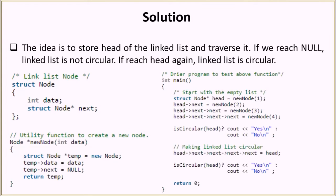Let's look at the solution. The idea we will be following is to store the head of the linked list in a variable and then keep traversing the linked list. We break the loop only in two cases: one, if we reach null, which means it is not a circular linked list; or two, if we reach the head pointer again, which means the linked list is circular.